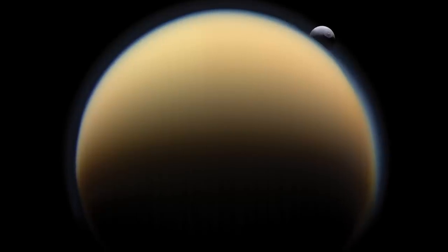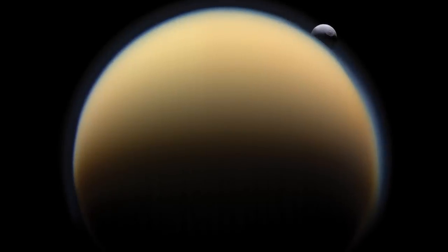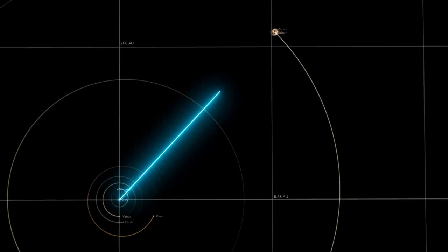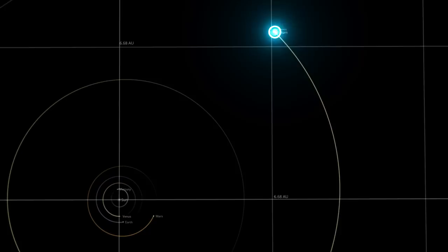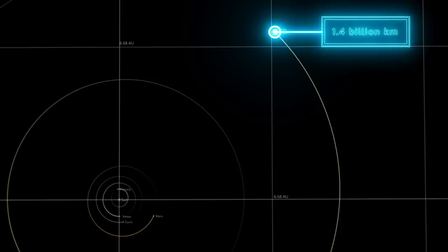So why are we considering the existence of life on Titan? After all, it's almost 1.5 billion kilometers away from the sun, well outside of the habitable zone.